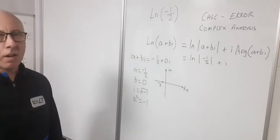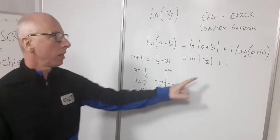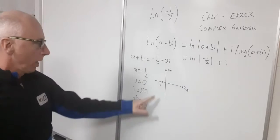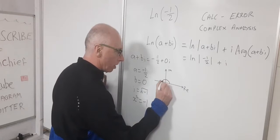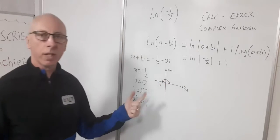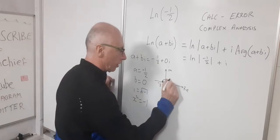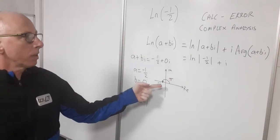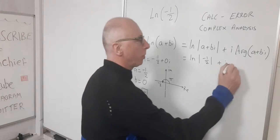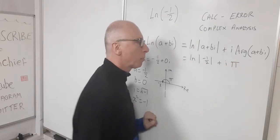Now what's our value for our principal argument? Our principal argument, if we go this way round, this angle here will give us pi. Therefore our principal argument is pi. So here we just plus i times pi.